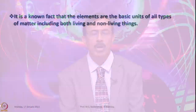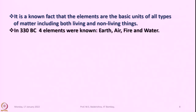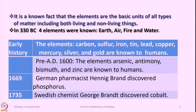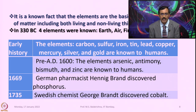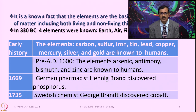Elements are the basic units of all types of matter, including both living and nonliving things. About 3,500 years back, Indians brought the concept of four elements: earth, air, fire, and water. In early civilizations, 5,000 to 8,000 years ago, elements such as carbon, sulfur, iron, tin, lead, copper, mercury, silver, and gold were known to mankind. About 1,600 years ago, elements such as arsenic, antimony, bismuth, and zinc were also known. Indians knew how to extract mercury from cinnabar and distill and purify it about 3,000 years back, and also had the concept of a fume hood.